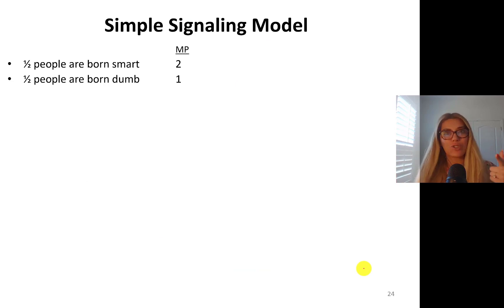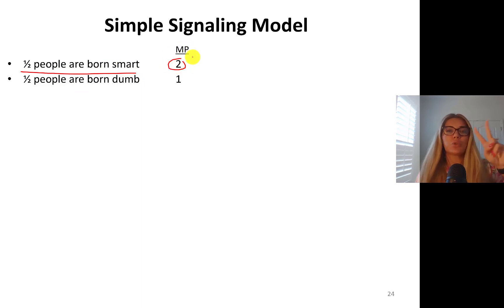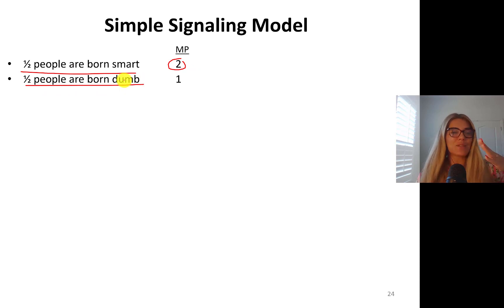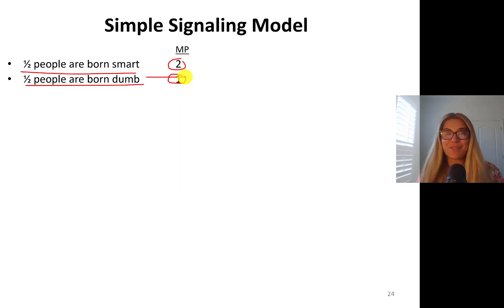In the next video, which you should be watching, we're going to work on a real signaling model with real wage rates. So we're going to assume half of the people in the population are born smart. Their marginal product of labor is two units per hour, whatever they're producing. And half of the people are born — it sounds kind of mean — not so smart.